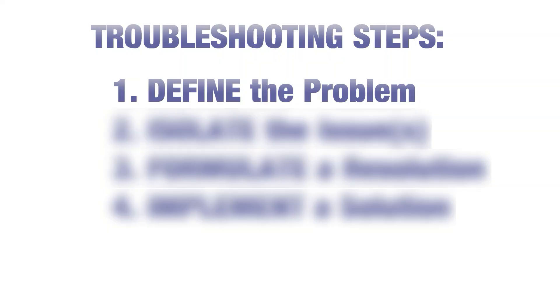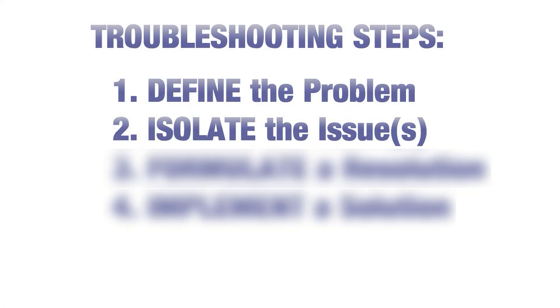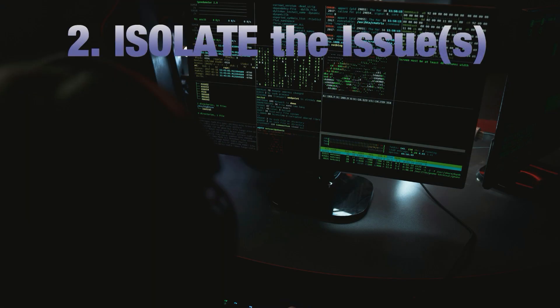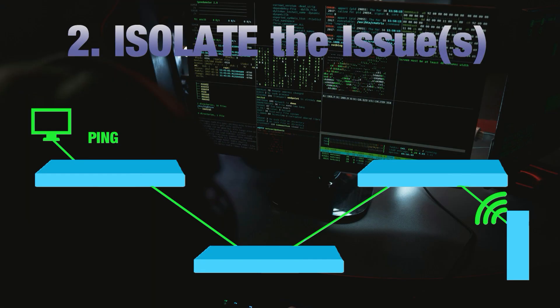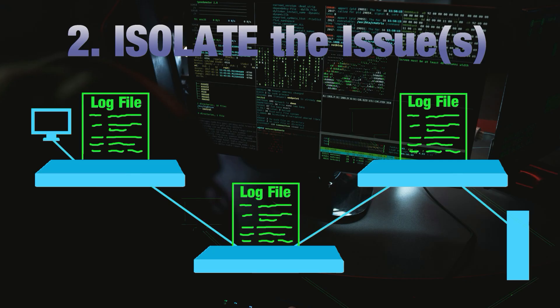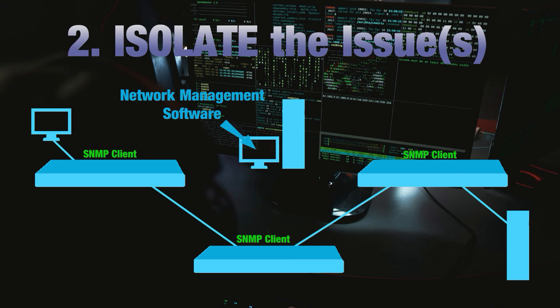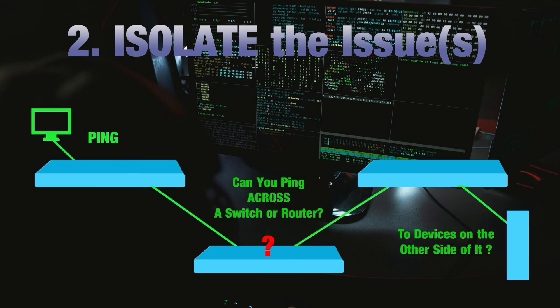Step two is to isolate the issue, or attempt to isolate the issue. You can use pings to different devices, check log files on devices around the issue — log files on switches, routers, and servers — to see if anything registered to determine what changed. If you're using network management software, did any clients report anything or did it detect any changes? Can you use the ping utility on different connected devices to ping across a switch where multiple users reported lost connectivity?